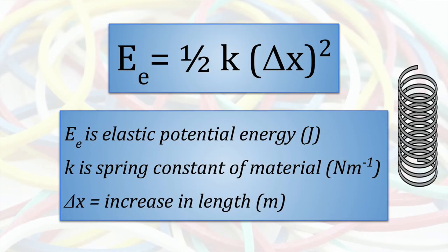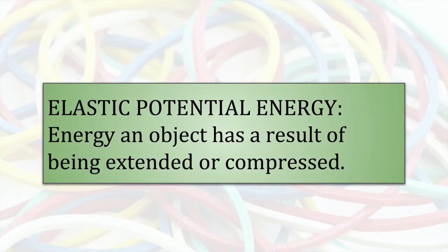Here is the formula for the elastic potential energy in joules gained by a material of spring constant k stretched by delta x. Elastic potential energy is half k delta x squared. So any object will store elastic potential energy when it is squashed or stretched by a force.